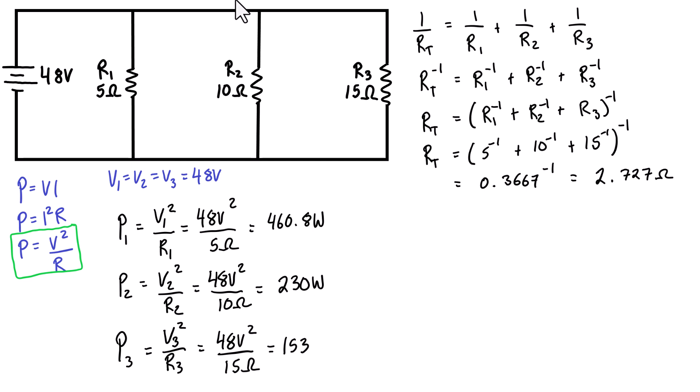Now that we have each of the individual power consumptions, we just want to add them all together. Whether it's in series or parallel, the total power consumed in the circuit is just the sum of all the individual powers. It's P1 plus P2 plus P3. Adding them up—460 plus 153 plus 230—we get a total power consumption of 844.4 watts.